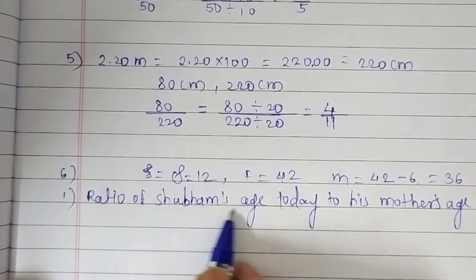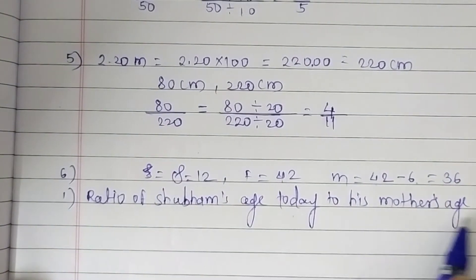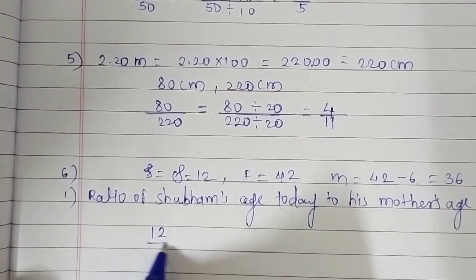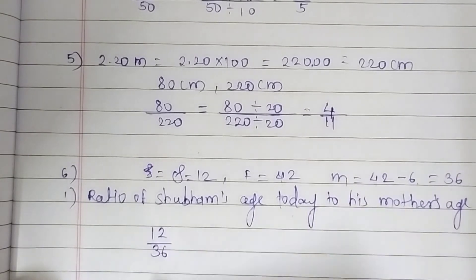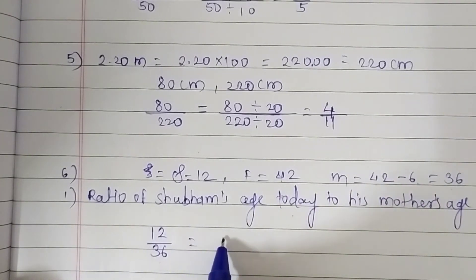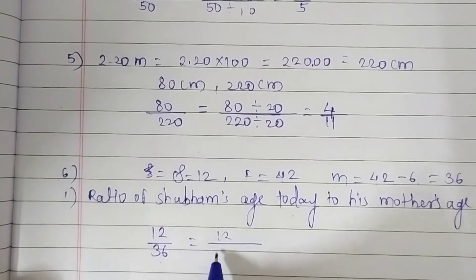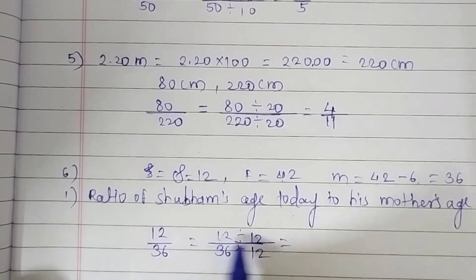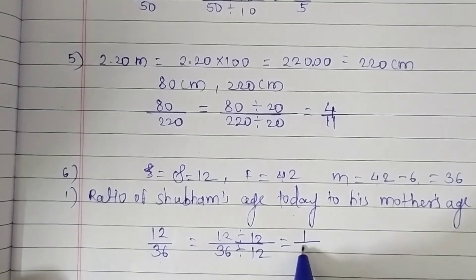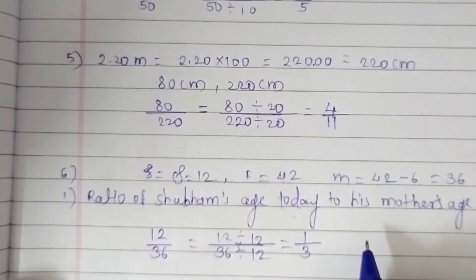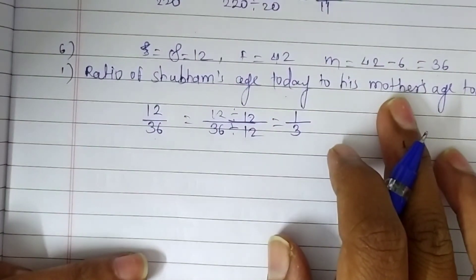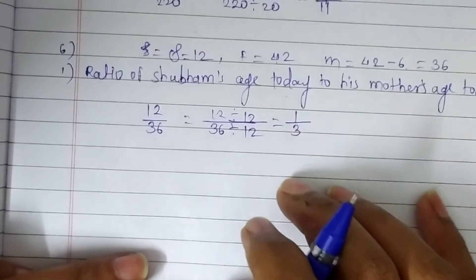First, find the ratio of Shubham's age today to his mother's age today. Shubham's age is 12 and mother's age is 36. Let's find 12 to 36: dividing both by 12 — 12 ones are 12 and 12 threes are 36 — so the ratio of Shubham's age to his mother's age today is 1 upon 3.